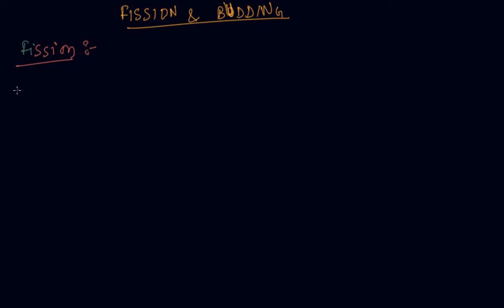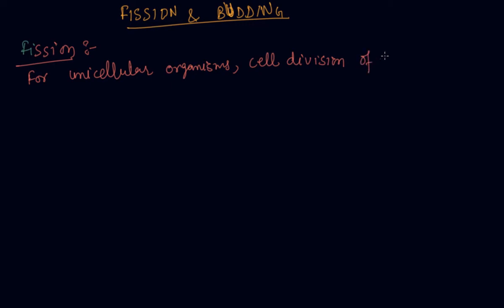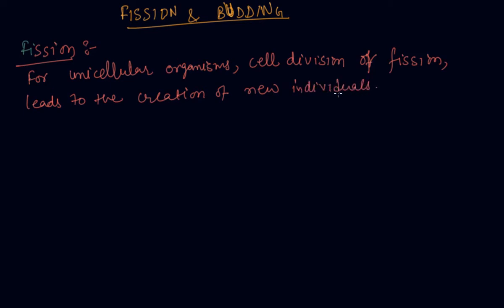Fission is only for unicellular organisms. Unicellular means having a single cell. For unicellular organisms, cell division or fission leads to the creation of new individuals. Many different patterns of fission have been observed. Many bacteria and protozoa simply split into two equal halves during cell division.